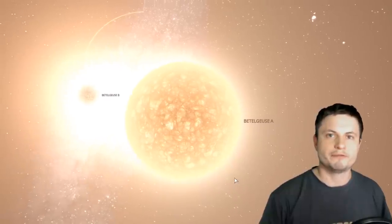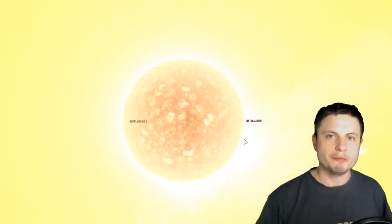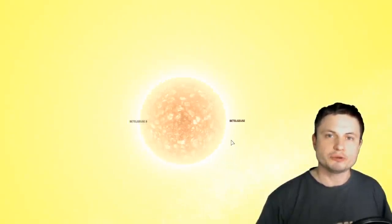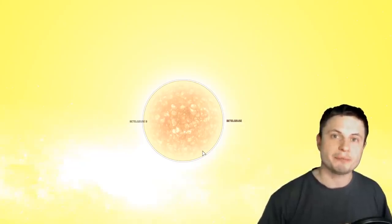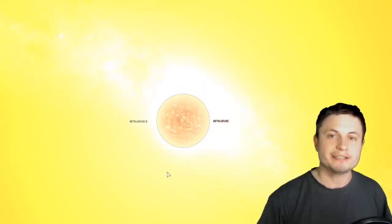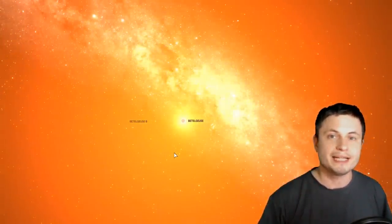In other words if the Betelgeuse star was a binary system and was then merged into a singular object it would actually have all of these features that we're observing today. But on top of this if this is what happened it's very likely that it still has so much material in it that it shouldn't really be going supernova anytime soon.